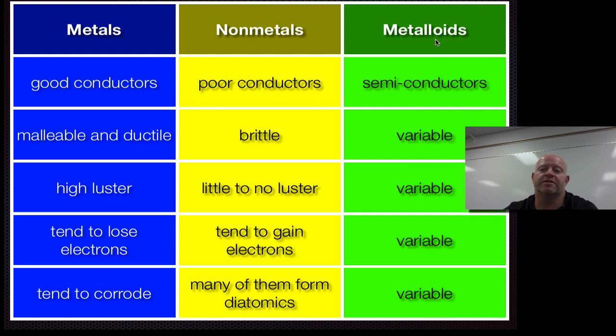But the easy thing about metalloids is they tend to do a little bit of both. So they might have something that's, it might be malleable, but no luster to it. Or it might lose electrons but also form diatomics. So it might have some properties of metals and some properties of non-metals.